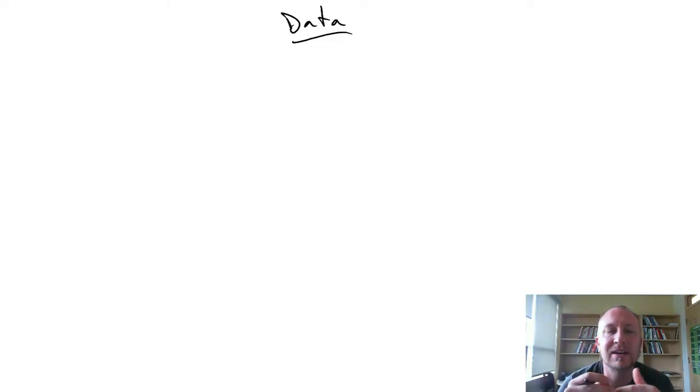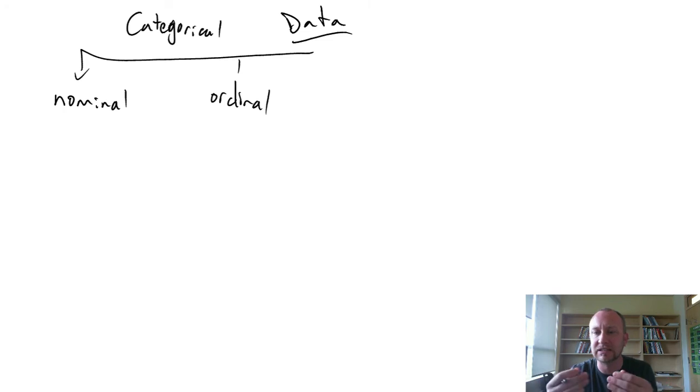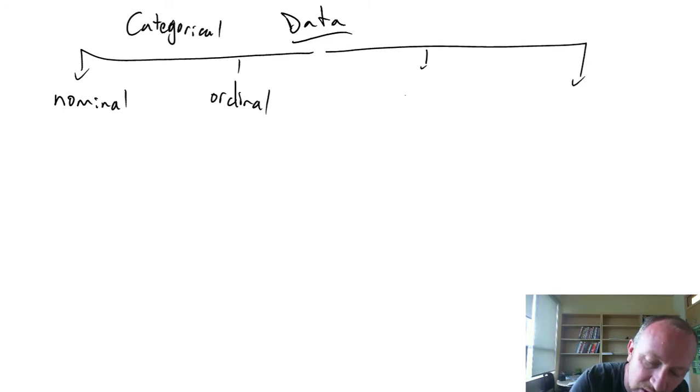So when we look at data, we need to understand what are the different types of data that we can work with. Data is generally divided into four different groups. We'll look at nominal variables, ordinal variables—these are both measures of categorical data, so we can categorize our observations. And then over here, we'll have interval data and ratio data. These are both quantitative.